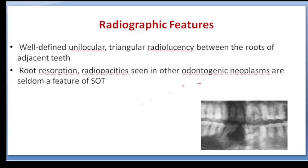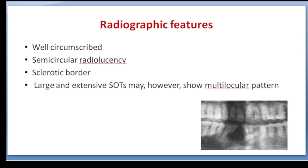Radiographically, a well-defined unilocular triangular radiolucency is seen between the roots of adjacent teeth. Sometimes root resorption is also observed. Occasionally, radiopacities are seen. It is a well-circumscribed lesion with a semicircular or triangular radiolucency surrounded by sclerotic borders.